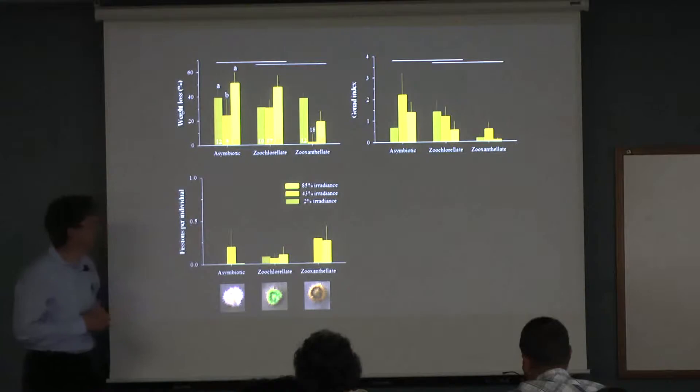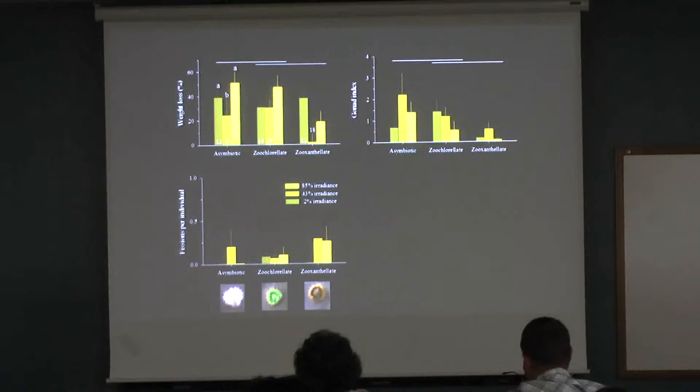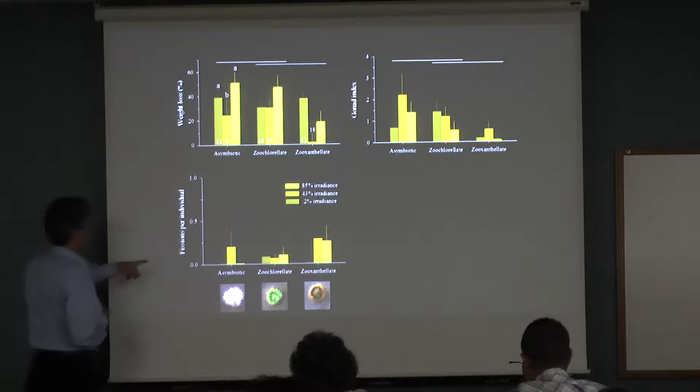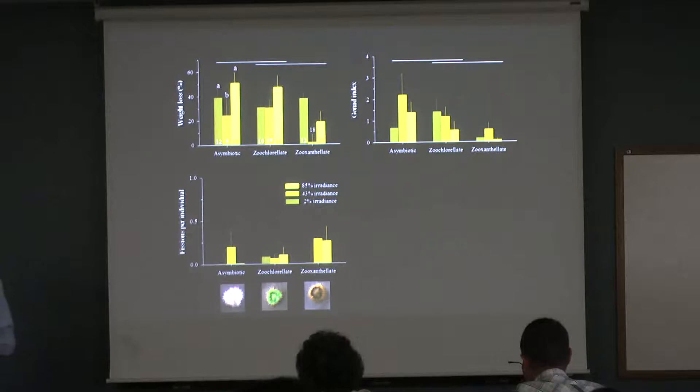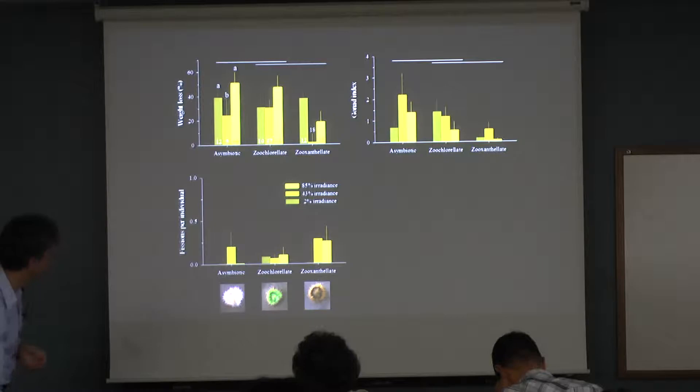For gonad index, the general pattern is that the browns had less gonad development than the other two symbiotic states — that's the pattern that was sort of opposite what we thought would happen. For fissions, we're seeing a different pattern where we're getting actually a little bit higher level of fission in the zooxanthellate browns. So the hint here was that maybe different symbiotic states are leading to different life history strategies in what these anemones are doing.